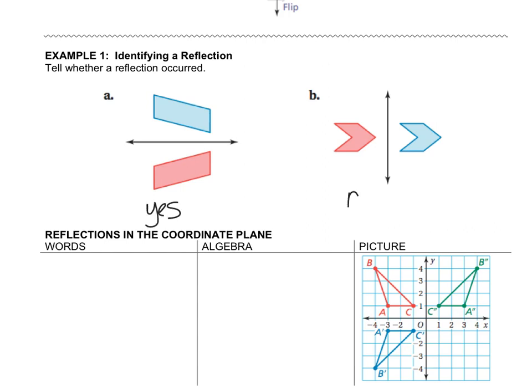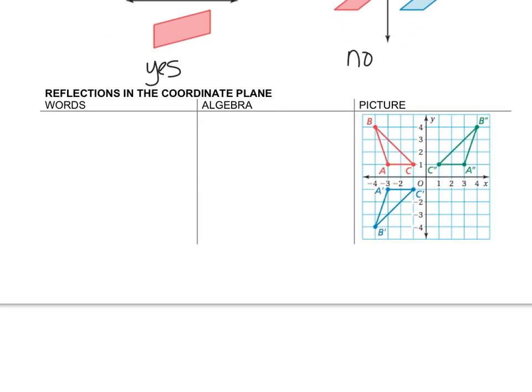And letter B is not. Letter B is actually what we talked about last time, which would be a translation. What we're going to do down below is talk about how this happens on the coordinate grid, because that's really where we're going to be reflecting the majority of our images.